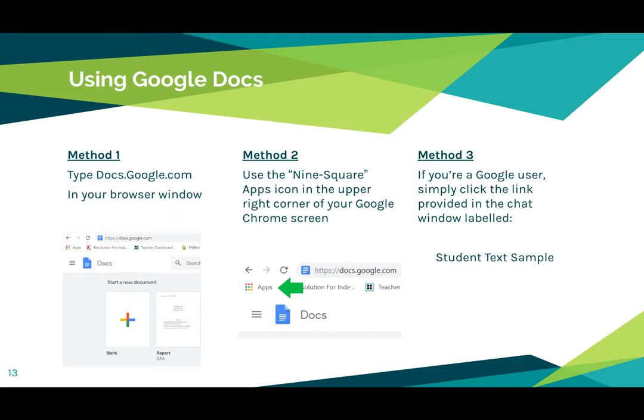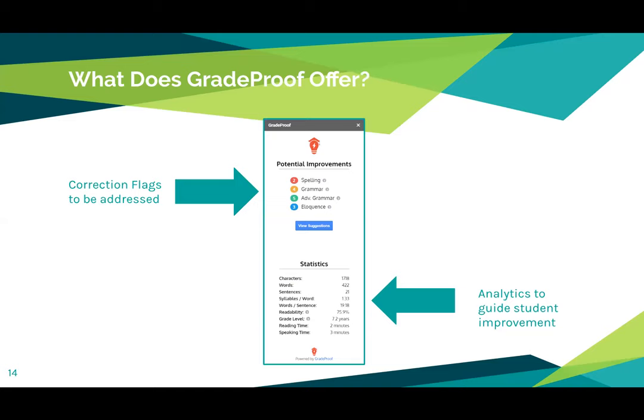To engage GradeProof with AI, go back to that same add-ons menu, select GradeProof with AI, and then start. On the right of your screen, an analysis block will appear. The crucial aspect of GradeProof is demonstrated by the color-coded section at the top of the block. Check out the bonus under Statistics. The first five call-outs share data, but only the word count is outwardly valuable to students. I encourage teachers to walk through readability to show how the score is derived. When I do the same with grade level, I need to clarify for students that 'years' refers to grade in school, not age.